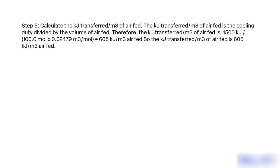Step 5: Calculate the heat transferred per m³ of air fed. The heat transferred per m³ of air fed is the cooling duty divided by the volume of air fed. Therefore, the heat transferred is 1500 KJ / (100.0 mol × 0.2479 m³/mol) = 605 KJ/m³ of air fed.